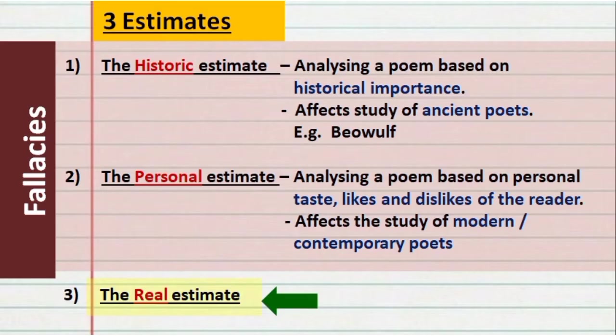The second estimate is the personal estimate, which involves analyzing a poem based on personal taste, likes, and dislikes. For instance, someone who doesn't appreciate fantasy elements might not enjoy even the best fantasy novel. The conclusion is based on personal bias. Arnold says the personal estimate mostly affects the study of modern or contemporary poets. Thus, both the historic estimate and the personal estimate are fallacies and are not to be used.